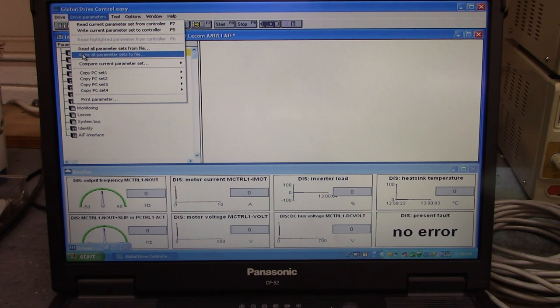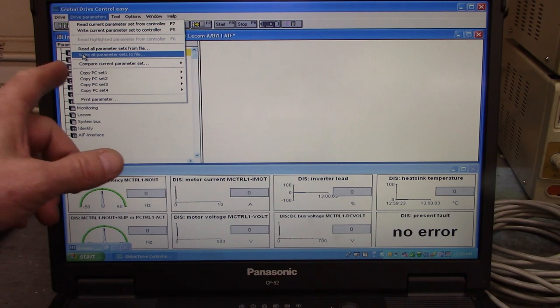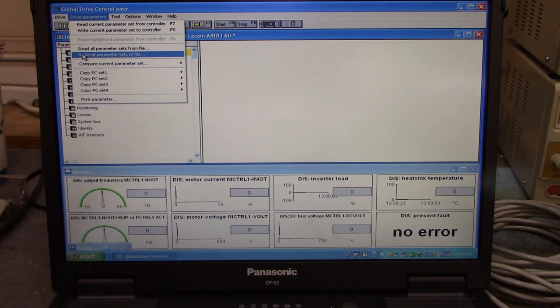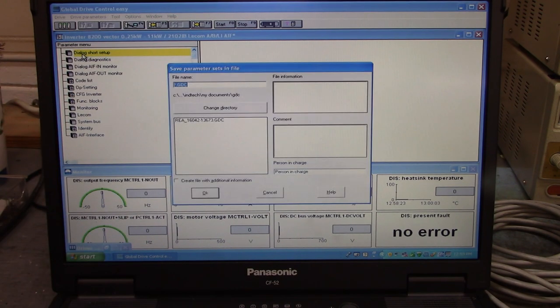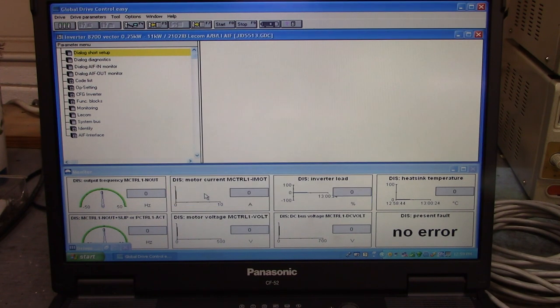Write all parameter sets to file. And we're going to give it a name, we'll call it job ID 5513, and we'll click on OK down here. There we go, it's saved. Amazing.